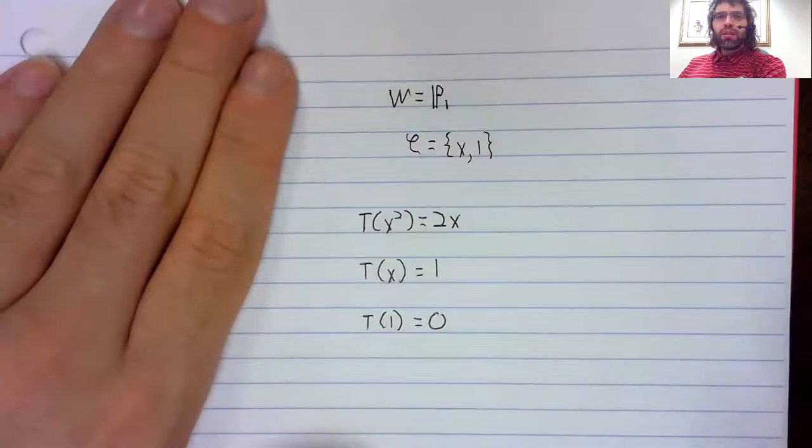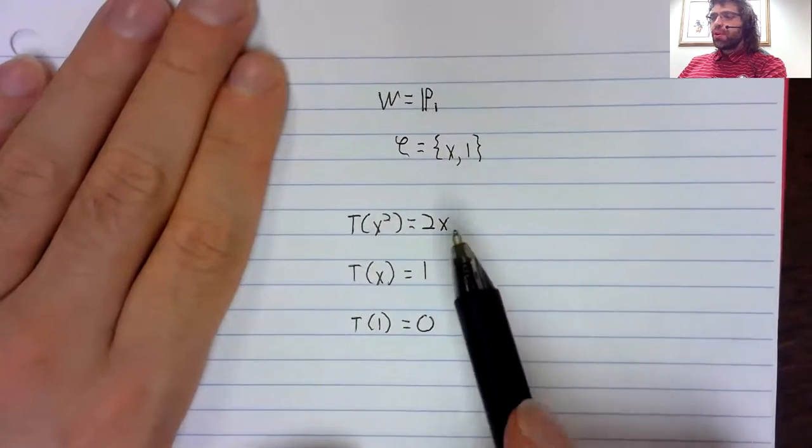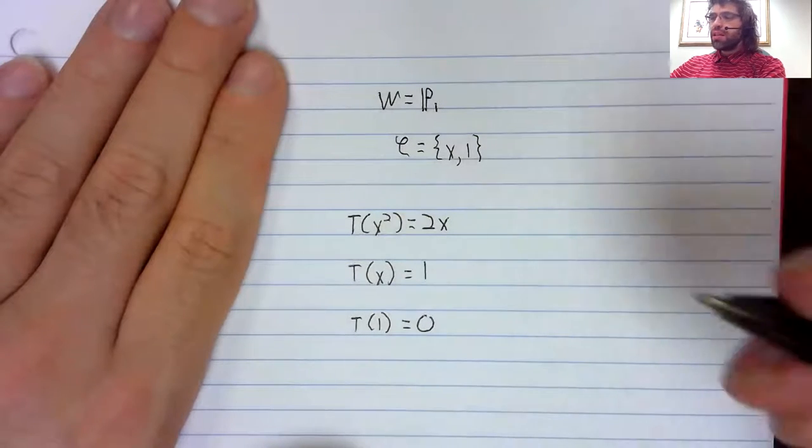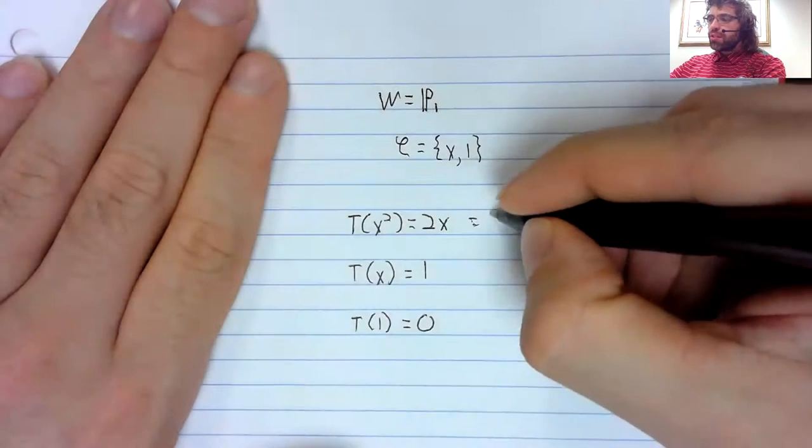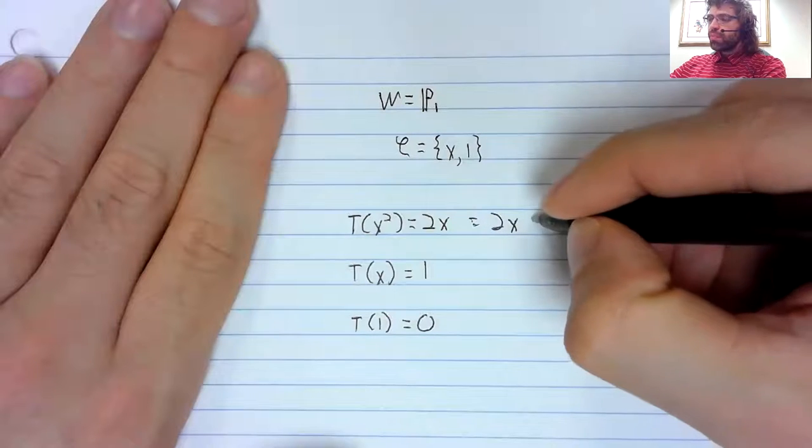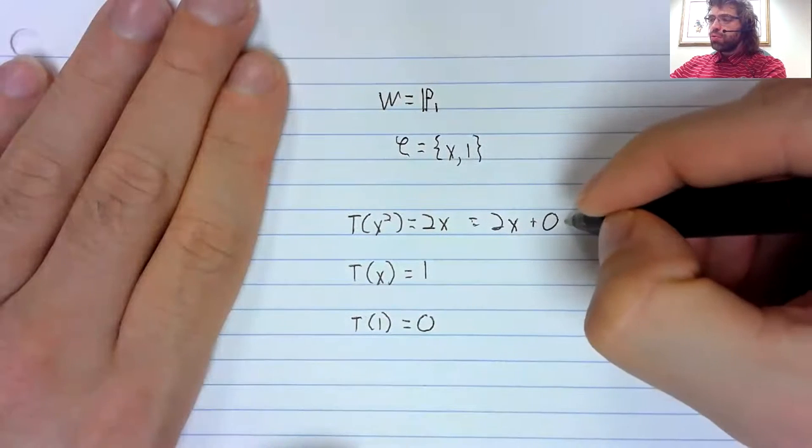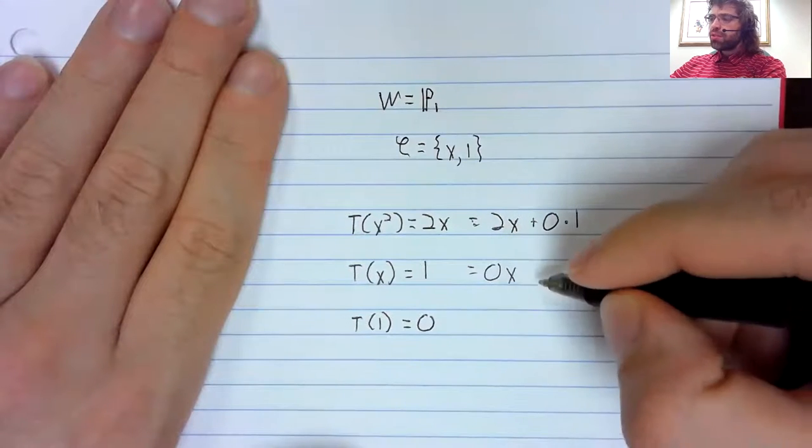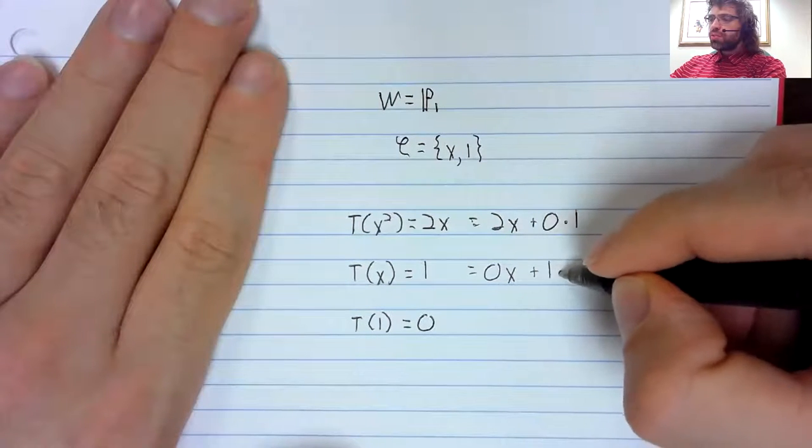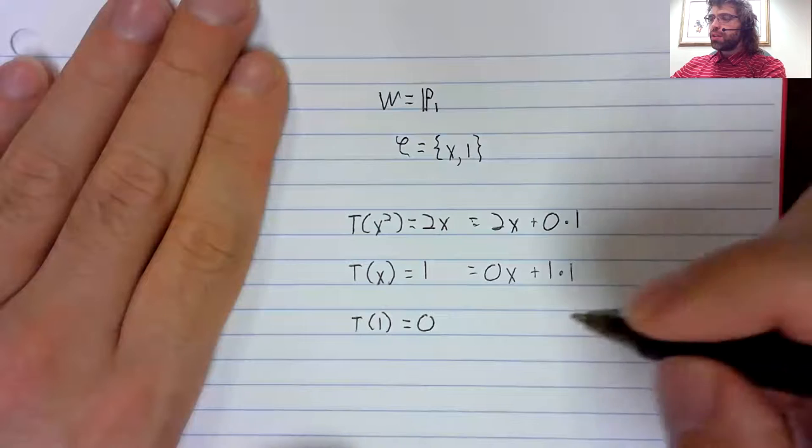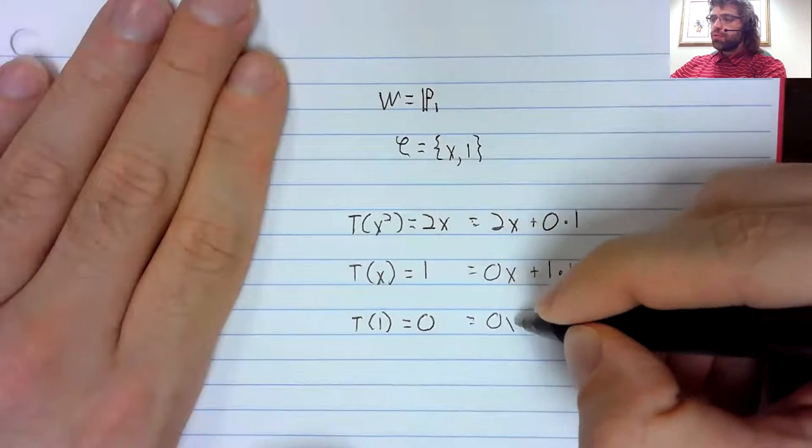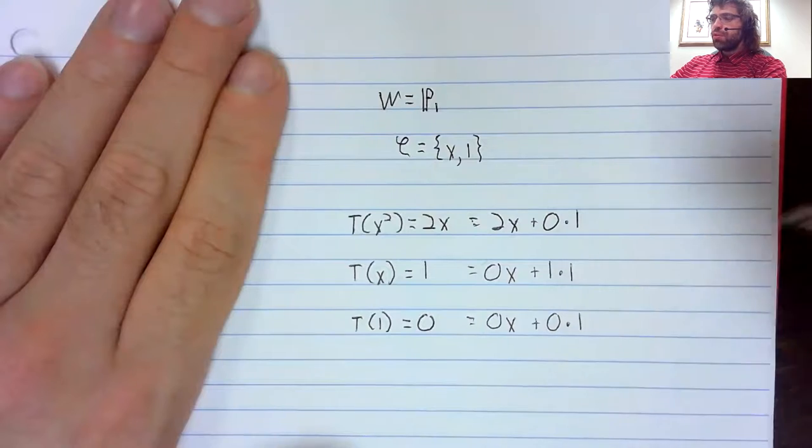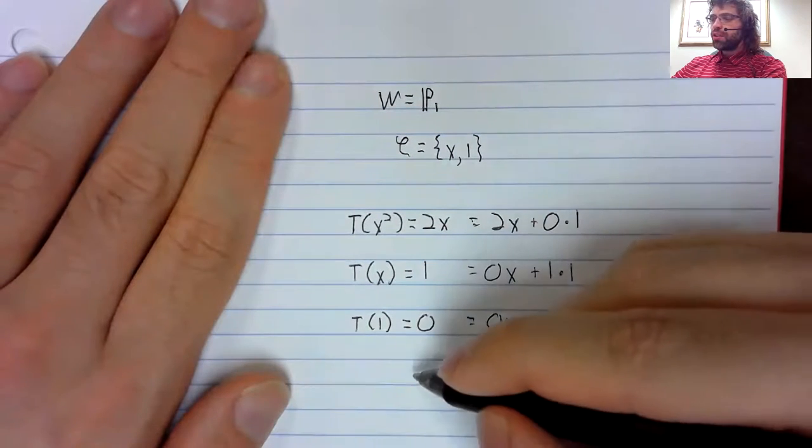Now we're done with this basis. We're going to look at these vectors in terms of C. This is two x plus zero times one. Zero x plus one times one. Zero x plus zero times one.